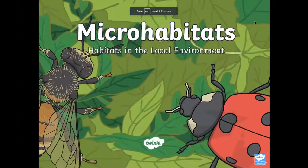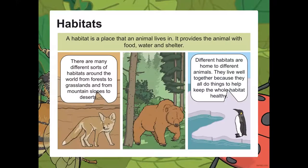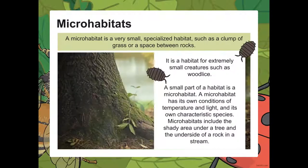A habitat is a place where an animal lives — it provides food, water, shelter, and space. There are many different sorts of habitats around the world, from forests to grasslands and from mountain slopes to deserts. Different habitats are home to different animals that live well together because they help keep the whole habitat healthy. A micro habitat is a very small, specialized habitat.